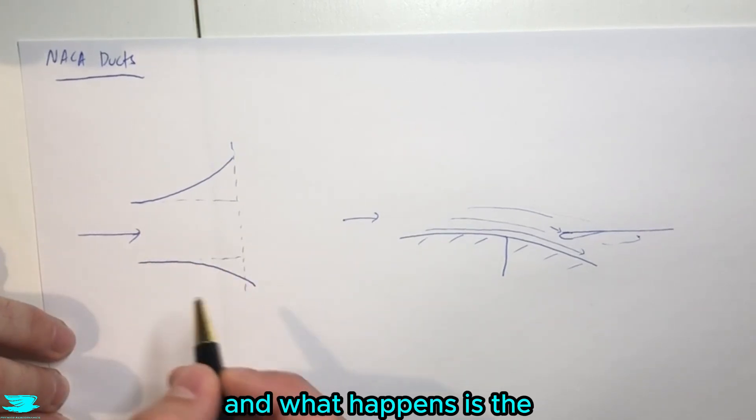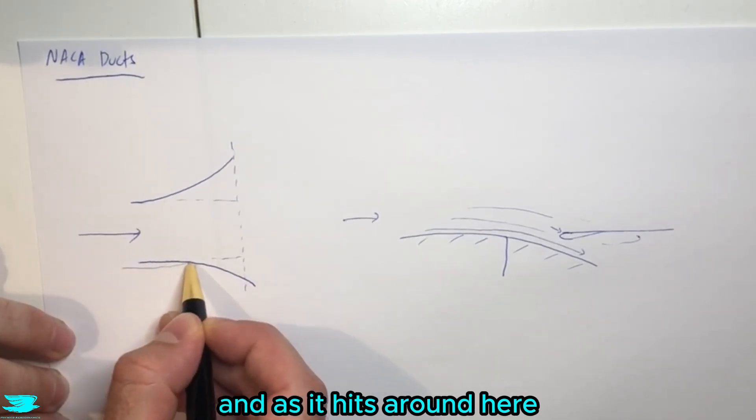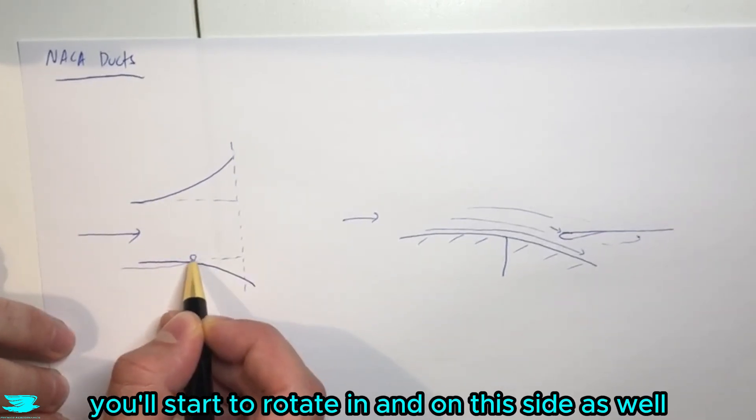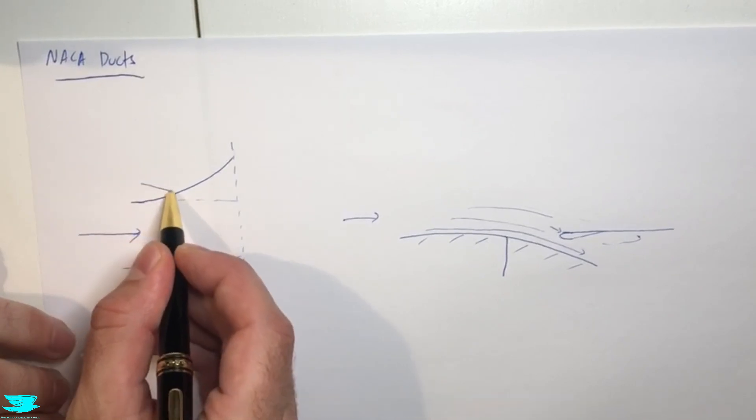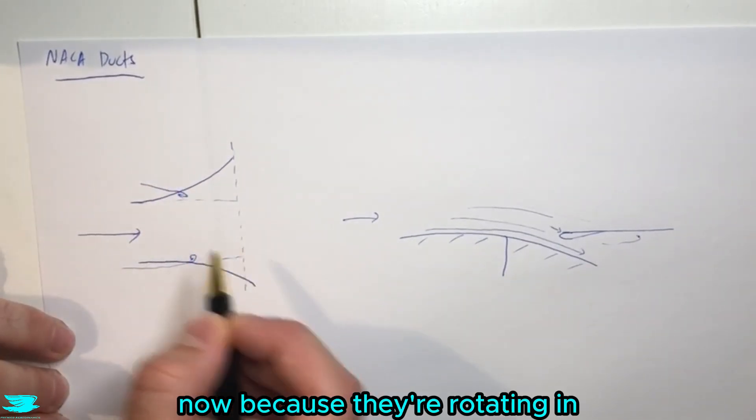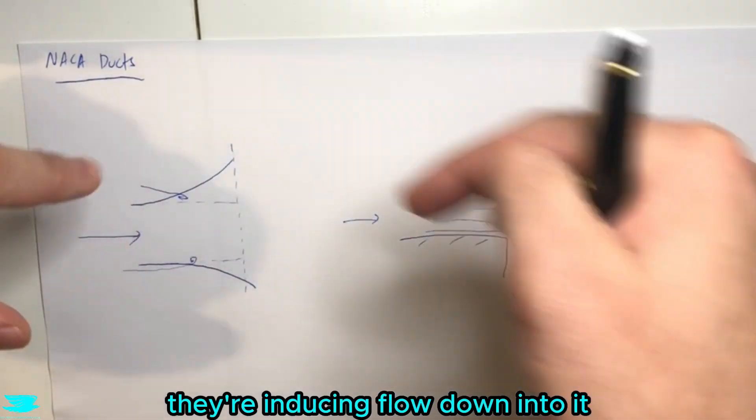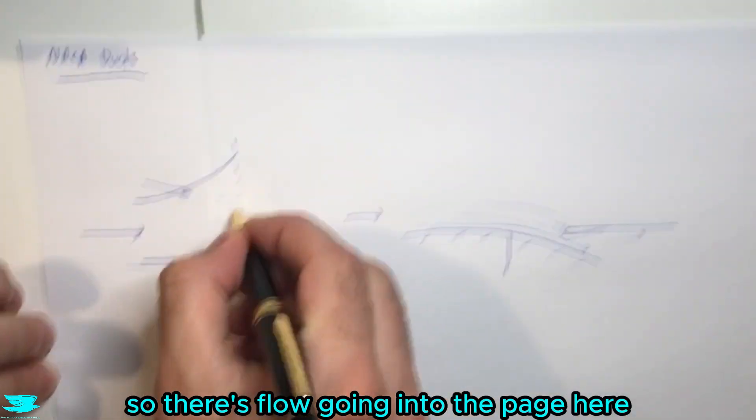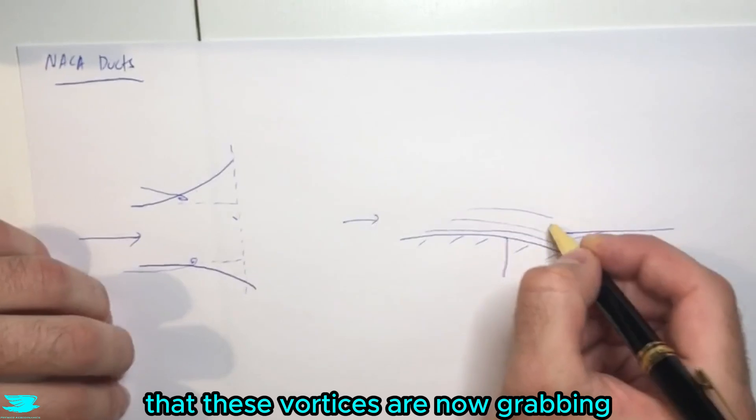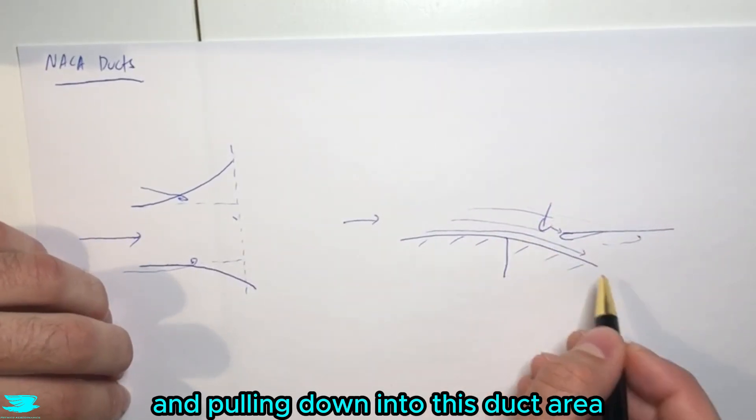And what happens is the flow comes along here, and as it hits around here, you'll start to rotate in, and on this side as well. Now because they're rotating in, if you think about, let's say you have the scoop and you have these vortices rotating in, they're inducing flow down into it. So there's flow going into the page here that these vortices are now grabbing and pulling down into this duct area.